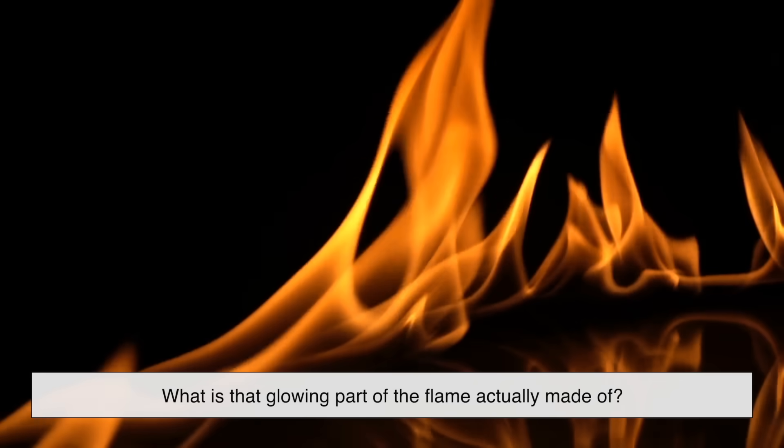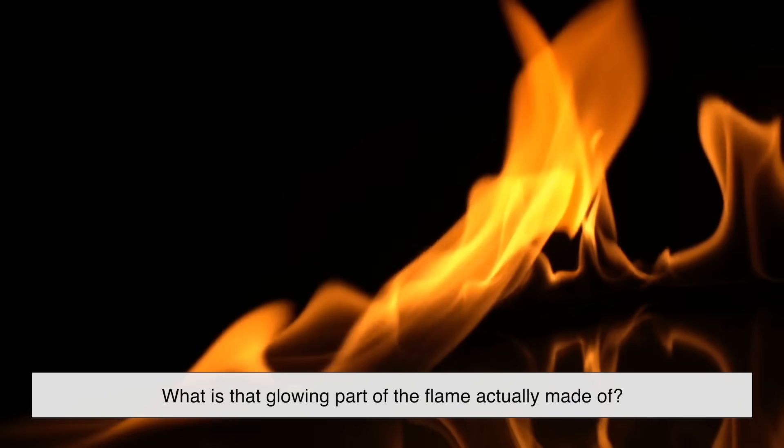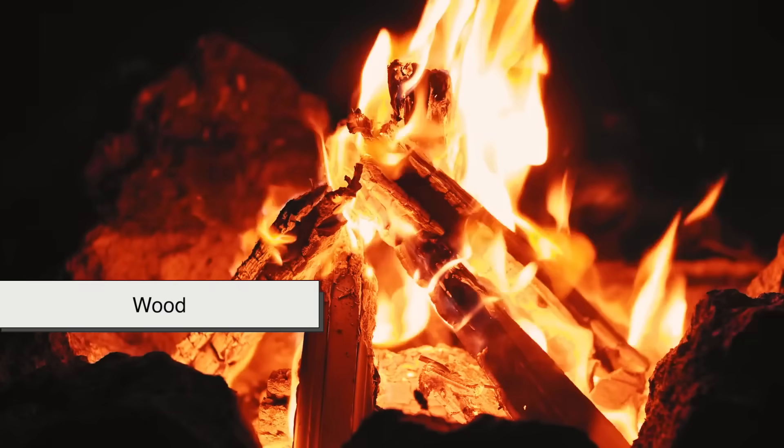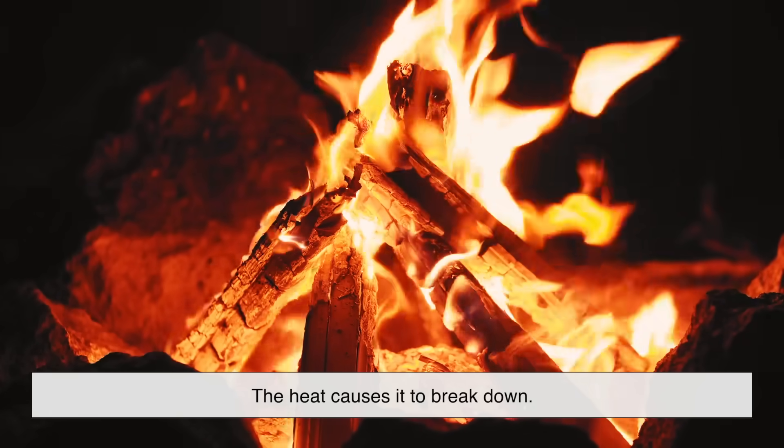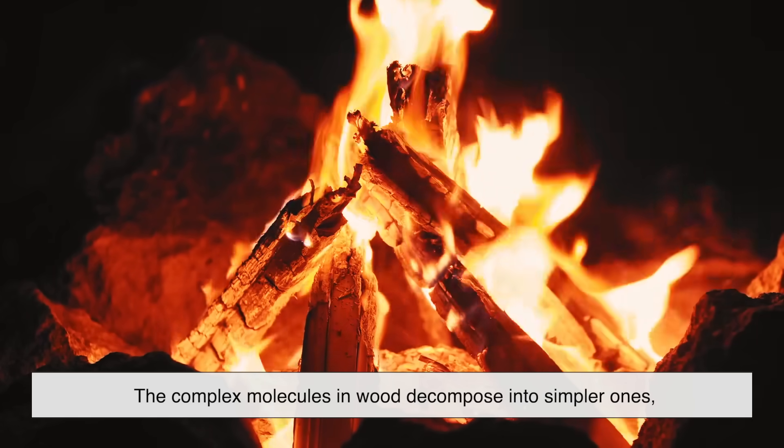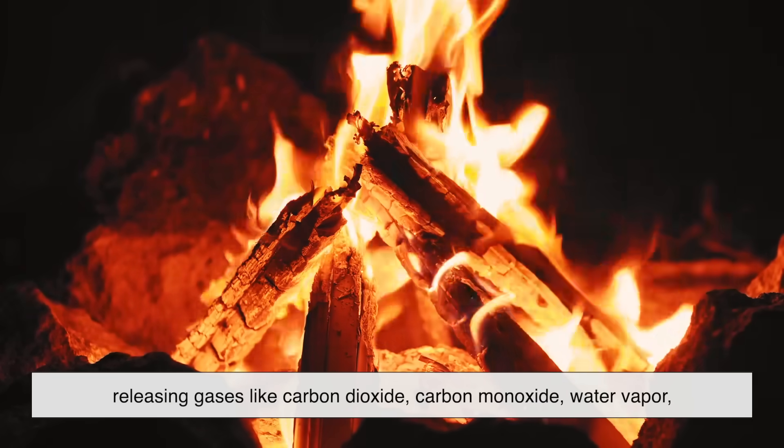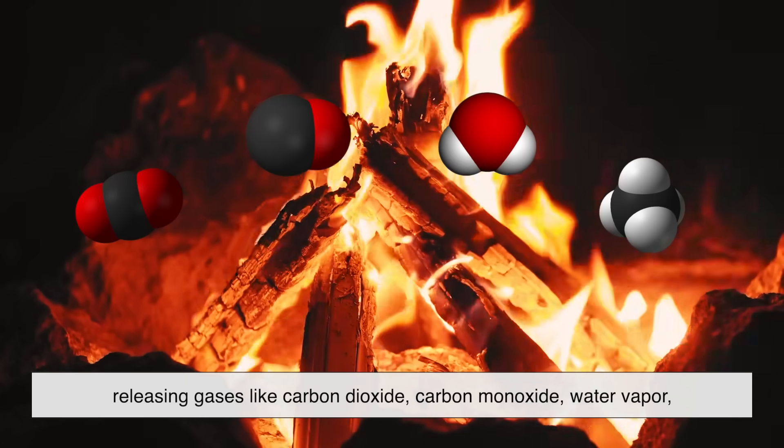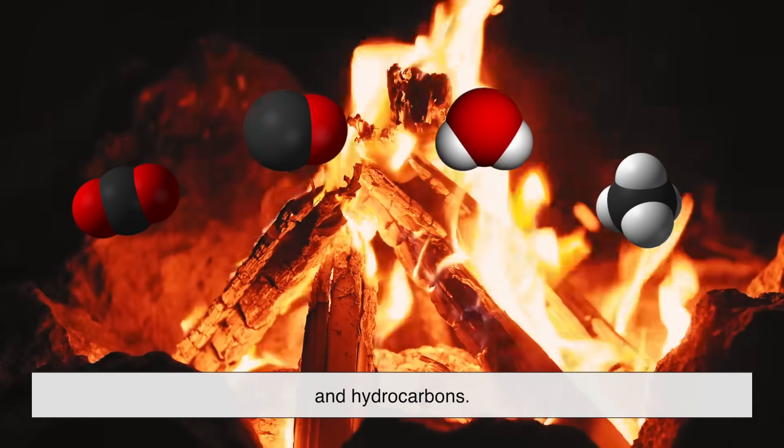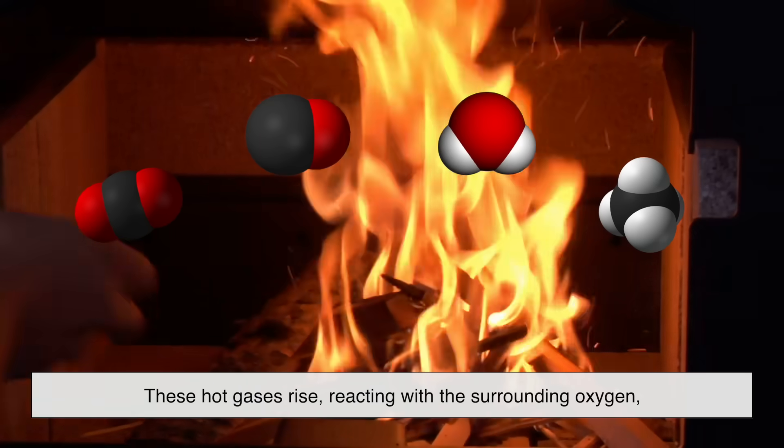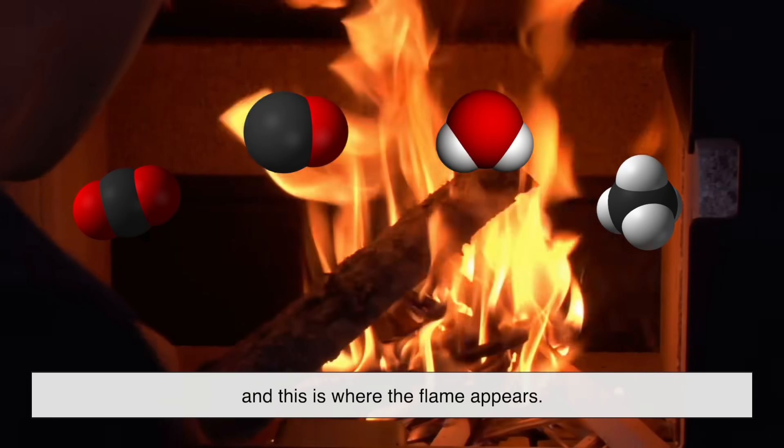Now here's where it gets really interesting: what is that glowing part of the flame actually made of? When something burns, let's say wood, the heat causes it to break down. The complex molecules in wood decompose into simpler ones, releasing gases like carbon dioxide, carbon monoxide, water vapor, and hydrocarbons. These hot gases rise, reacting with the surrounding oxygen, and this is where the flame appears.